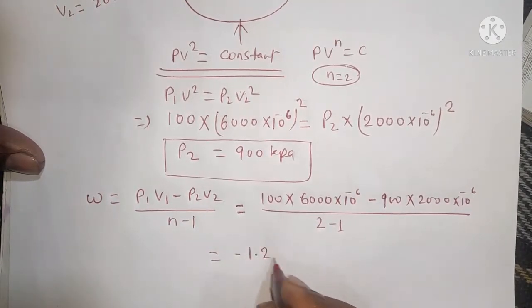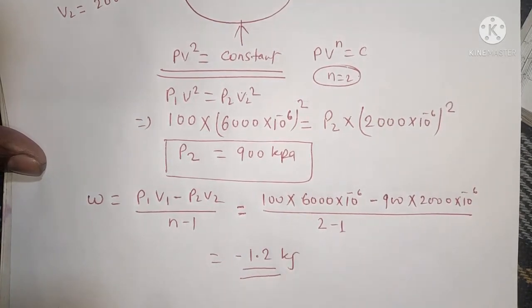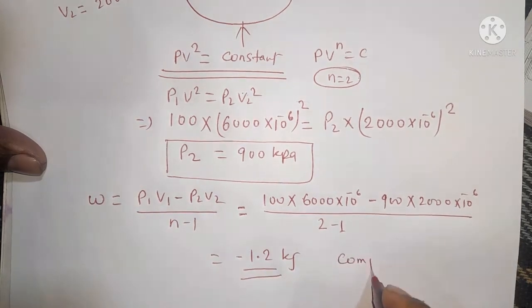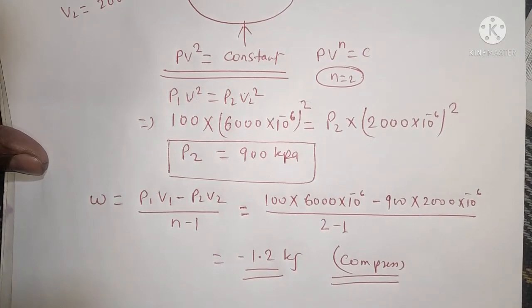When we solve this, we get negative 1.2 kilojoules. The negative sign indicates the gas is being compressed, meaning work is being done on the gas.